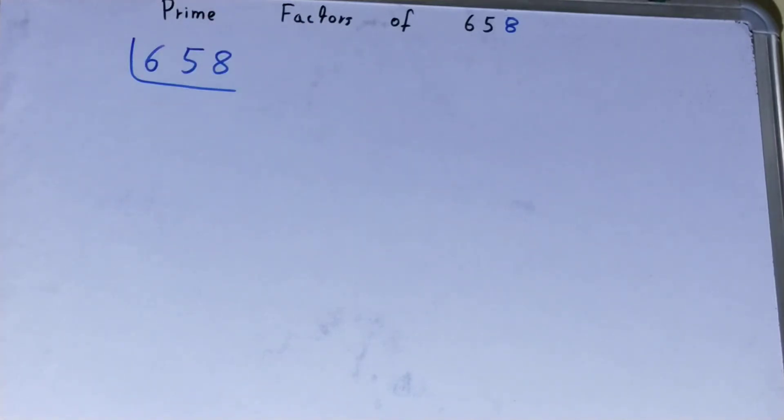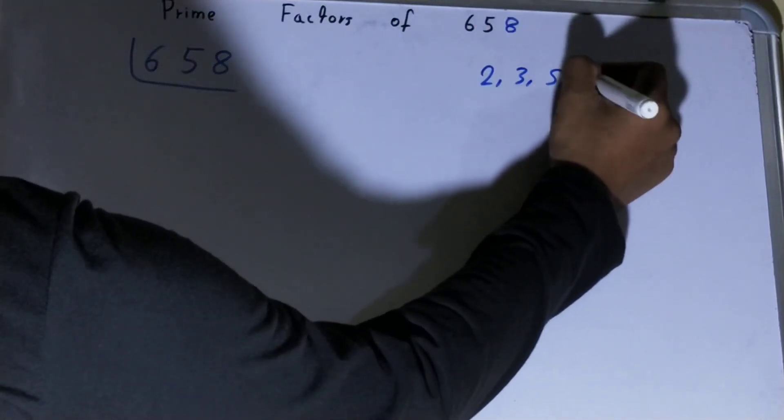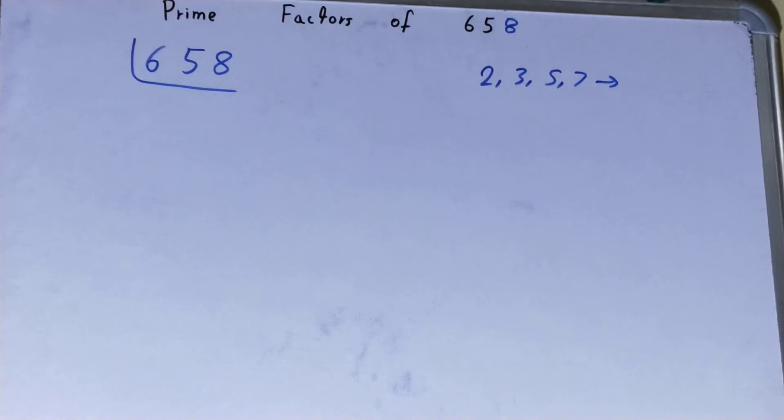Before solving this any further, you must know what prime numbers are. Prime numbers are numbers that are divisible by 1 and the number itself, like 2, 3, 5, 7, and so on.